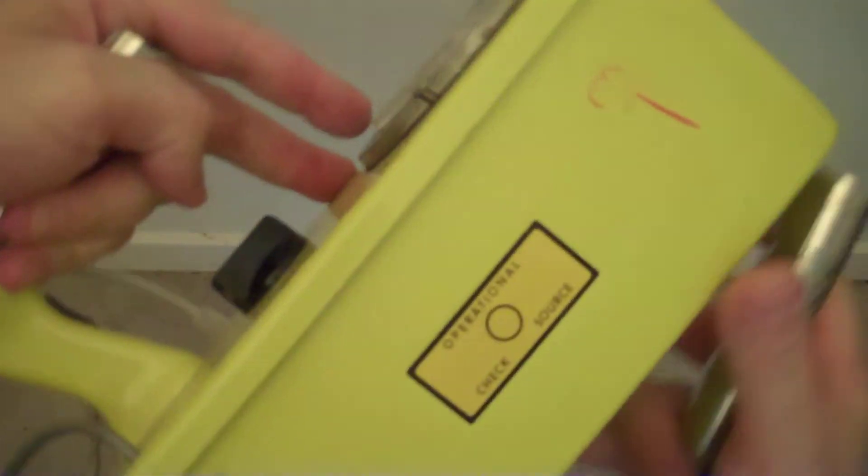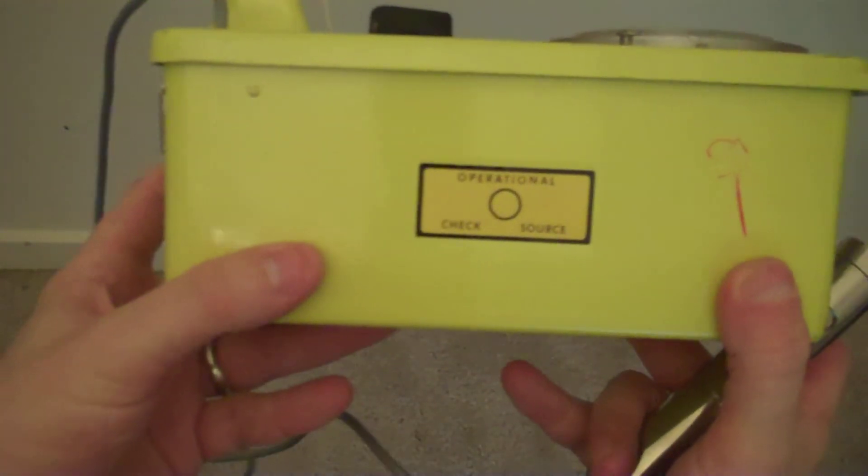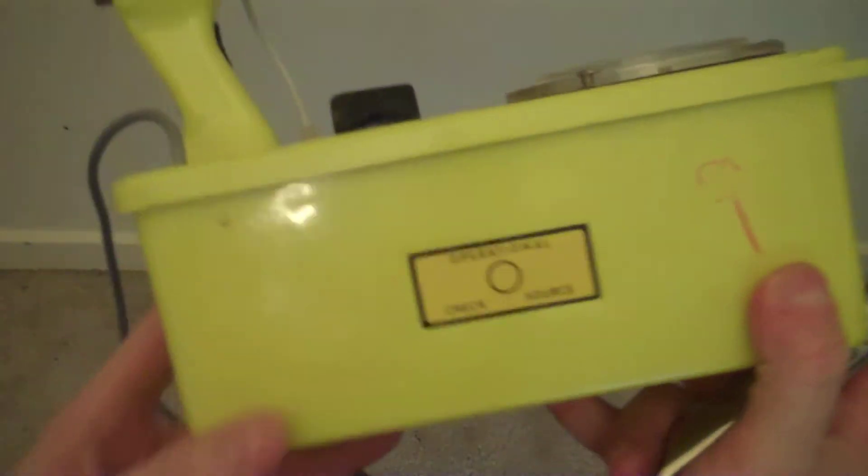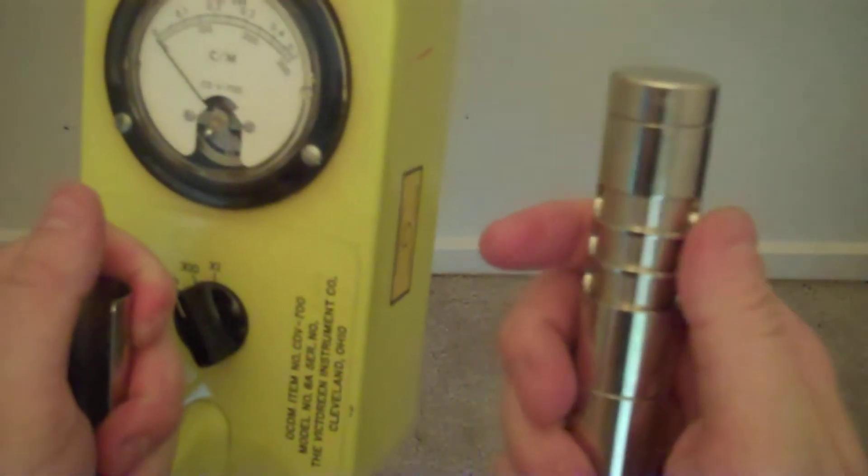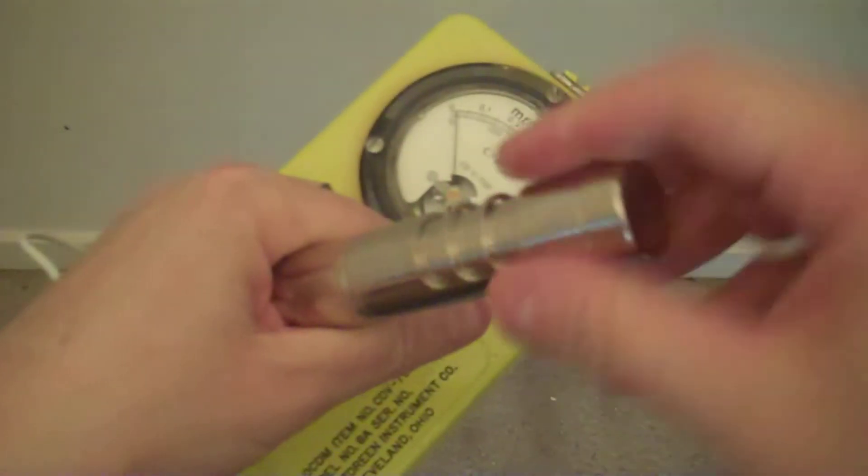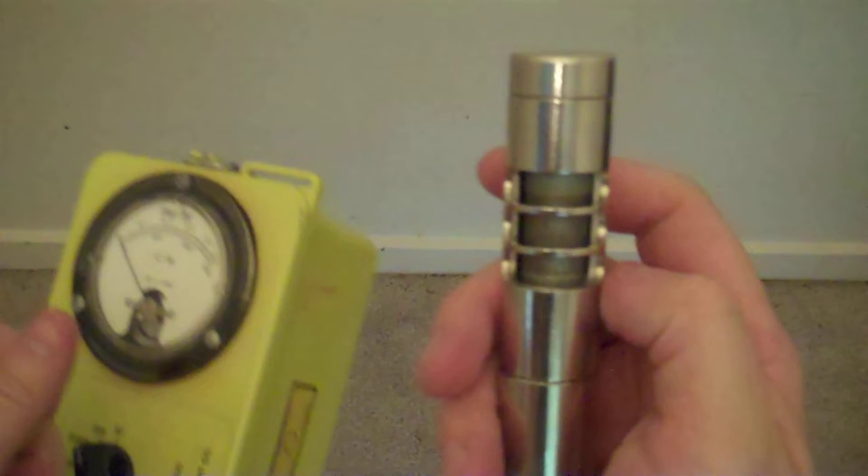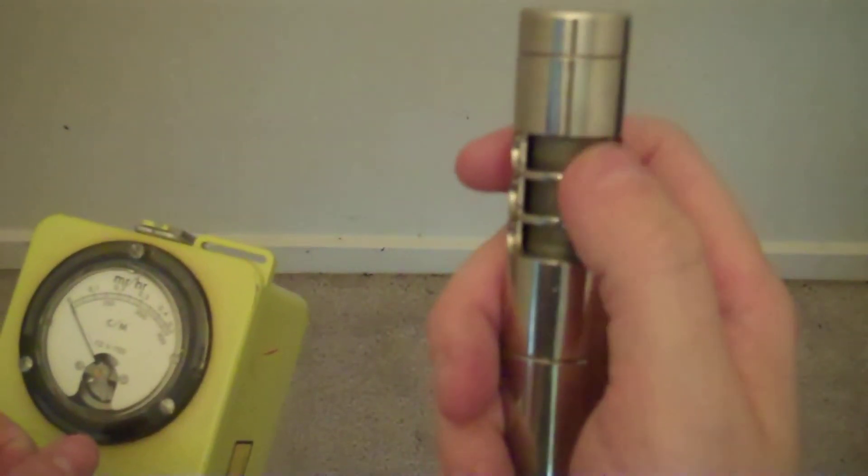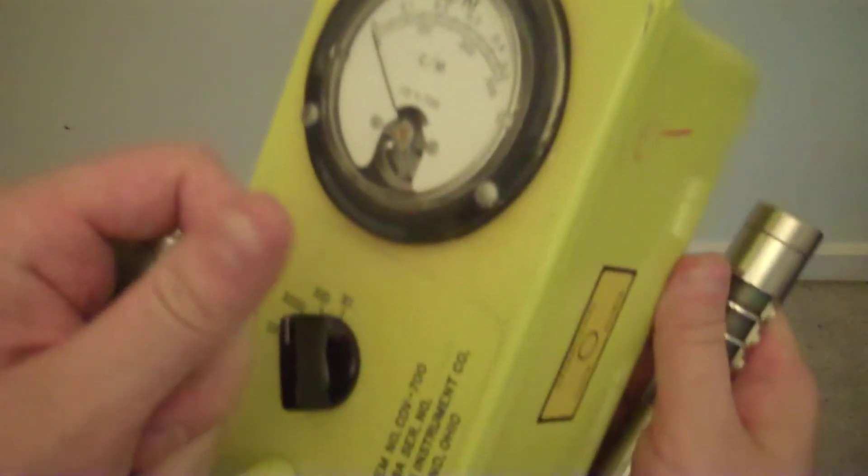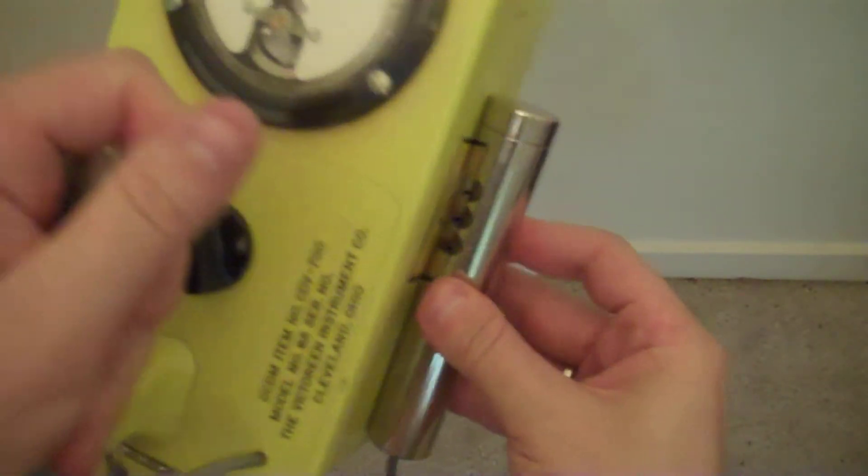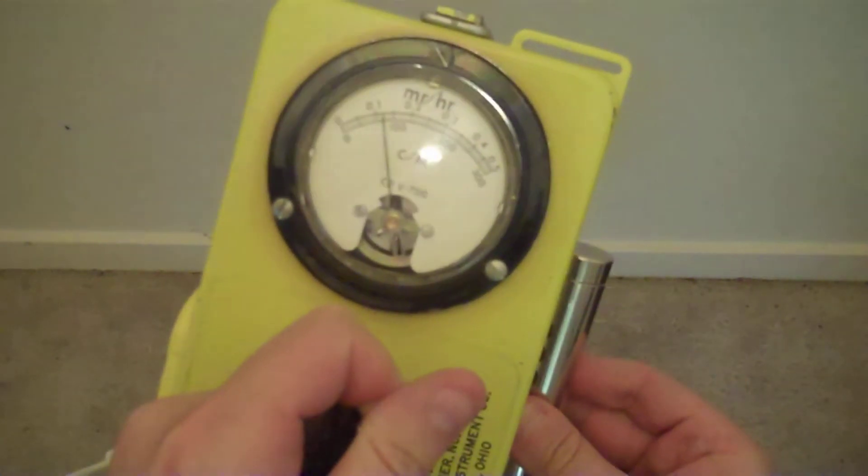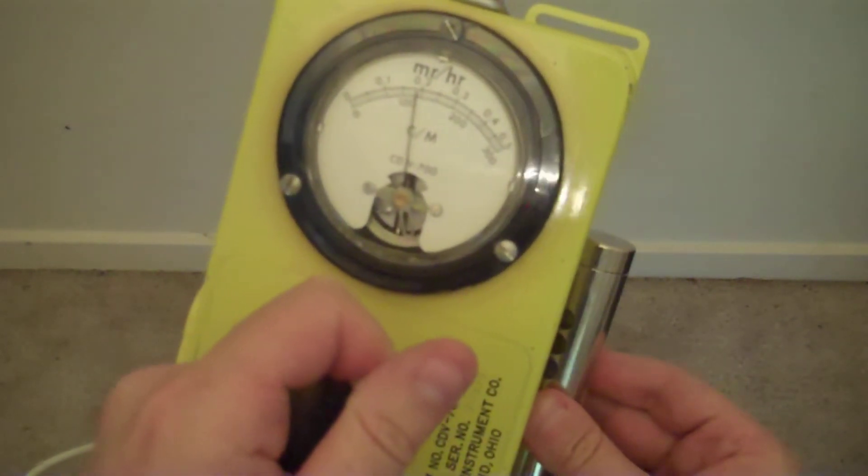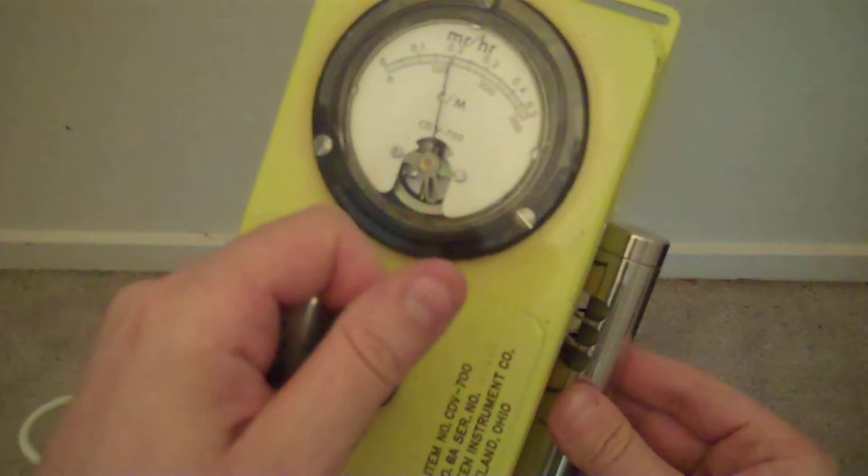This unit comes with an operational check source built into it. A piece of depleted uranium built into the actual unit to determine its functionality. Immediately cutting the unit on and opening up the beta shield. The beta shield protects this unit from beta radiation so that you can detect only gamma. But if you open it up, the Geiger tube is exposed, and the beta radiation can also be measured.